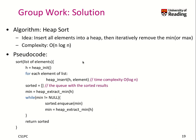This algorithm is called heap sort. The idea is you insert all the elements into the heap and then iteratively remove the minimum or the maximum, depending on the kind of heap you have. That leads to a complexity of n log n. For each element of our list we want to sort, we insert it into the heap — inserting has a complexity of log n, and since we do this n times, the total insertion complexity is n log n.